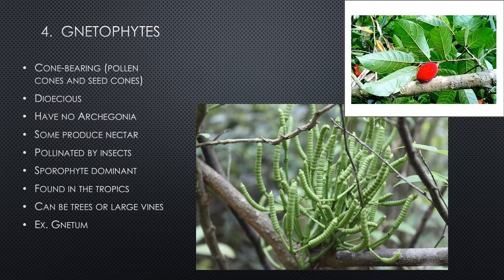The fourth gymnosperm type is gnetophytes — also cone-bearing and dioecious, with male and female cones. They are pollinated by insects, some produce nectar, and they are sporophyte dominant. Found in the tropics, they can be trees or large vines.